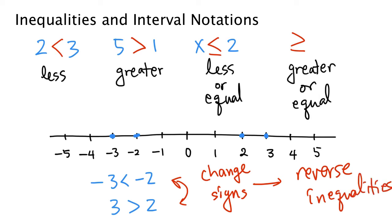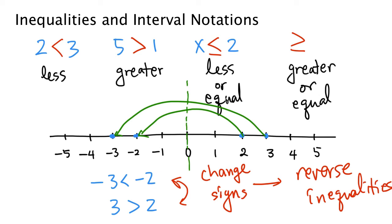We can see this from the number line picture as well. When you change signs, 2 goes to negative 2 and 3 goes to negative 3. What's happening is that we reflect these numbers to the opposite side of 0 — like a mirror. What was on the left is now on the right, and what was on the right is now on the left. The same principle applies with variables: if x is less than or equal to 2 and we change the signs of both sides, we get negative x greater than or equal to negative 2.